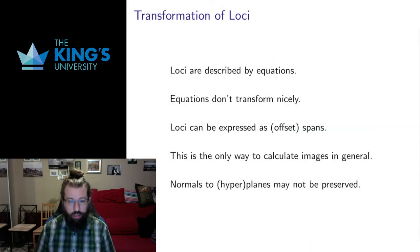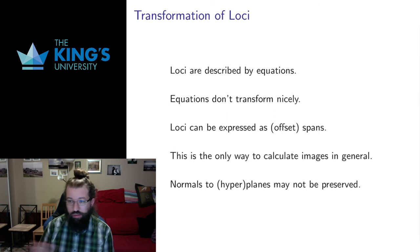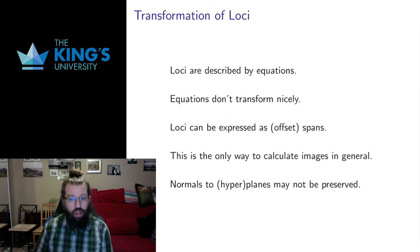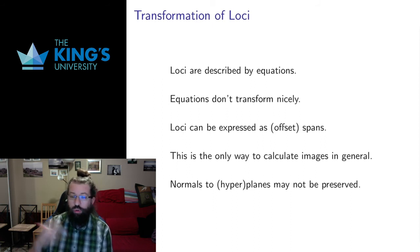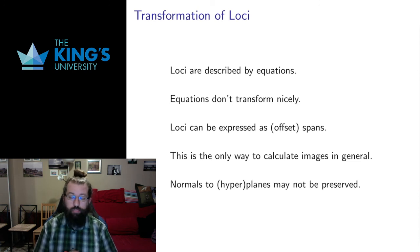What happens with loci? Loci are not described by linear combinations, they're described by linear equations, and we might think, well that's good, linear equations are formed of linear operations. Unfortunately, they don't transform as nicely. We can't just transform the coefficients of the equation, there's no sort of nice equation goes to equation transformation of loci. It's annoying, but it's just something we have to live with.